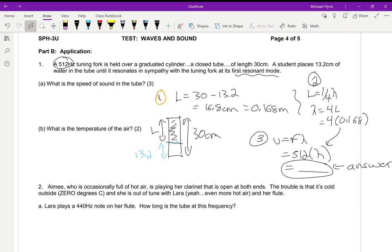Pardon me, I made a mistake. Four times 0.168 equals v times 512. I get 344. Okay, I get 344 meters per second. And then here in step two we're going to go with 344 equals 332 plus 0.59T. Solve it for temperature.